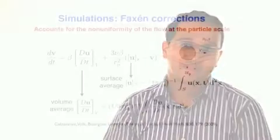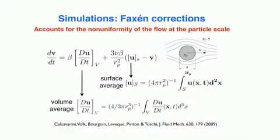The experimental results are compared with numerical simulations. These DNS simulations implement Faxén corrections, which account for the non-uniformity of the flow at the particle scale.